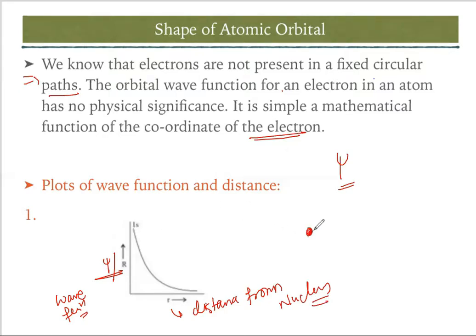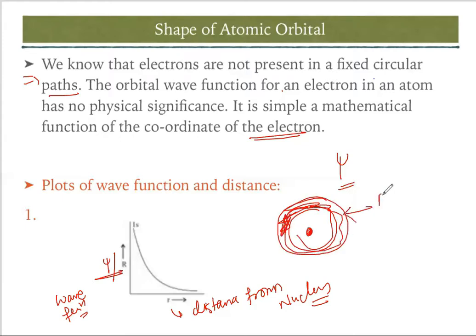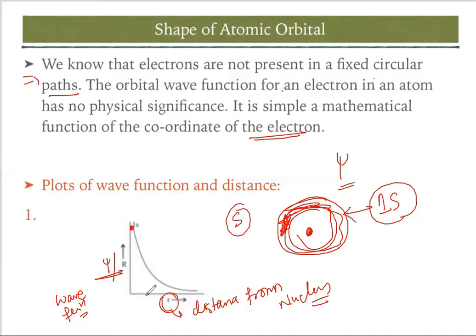For 1s, the orbital must be present near the nucleus. When drawing the graph of s, it starts from a peak point on the ψ or r axis and goes down. The number of nodes for 1s is n − l − 1 = 1 − 0 − 1 = 0, so there are no nodes. That means it won't cut the x-axis; it simply starts from a higher point and goes to infinity.